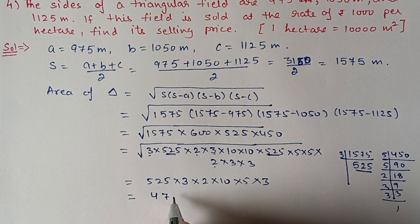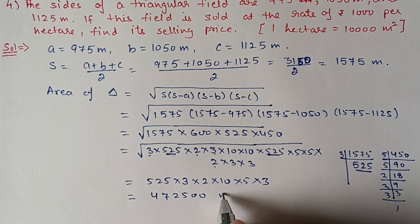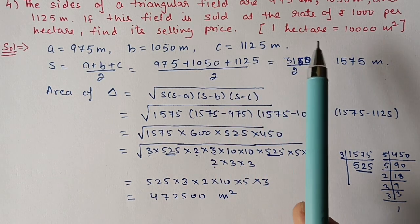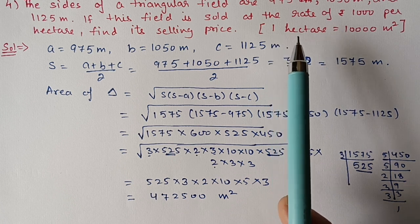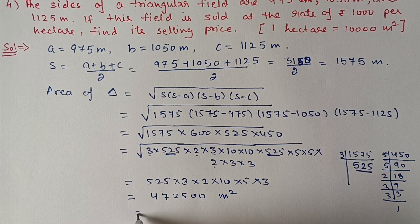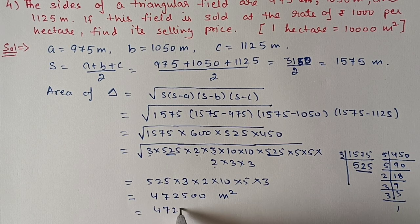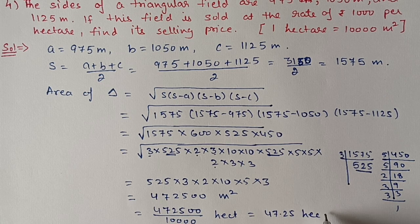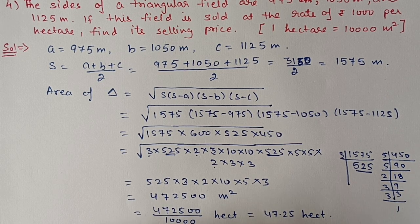After calculation, the area comes out to 472,500 m². Since the rate is given per hectare and 1 hectare = 10,000 m², we divide by 10,000 to convert, giving 47.25 hectares.